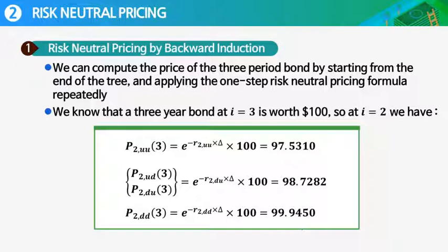We know that a three-year bond, or actually three-period bond, at t equals 3 is worth $100. So at t equals 2, or one and a half years later, we have this one. This is what we already did. In one year later, one and a half year bond price becomes this one.